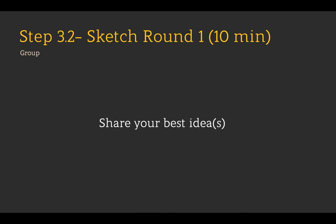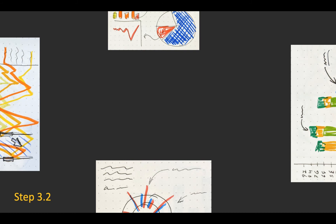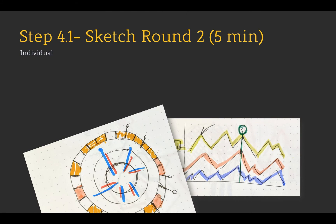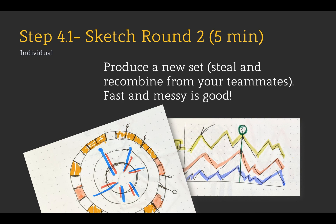Once you've produced as many sketches as you can — probably in those 12 minutes — we're going to do a round where we share ideas with the group. Each of you will pick your best idea and share it, going around the table in a round-robin fashion. This is not the time to critique; just present the high-level idea. If you have more time, share your next best idea. When done, you'll do another quick sketch round, about five minutes. Produce a new set of sketches — you're totally welcome to steal and recombine ideas from teammates. Fast and messy is good. Always keep the domain cards in mind, making sure your visualizations address the concerns you highlighted earlier.